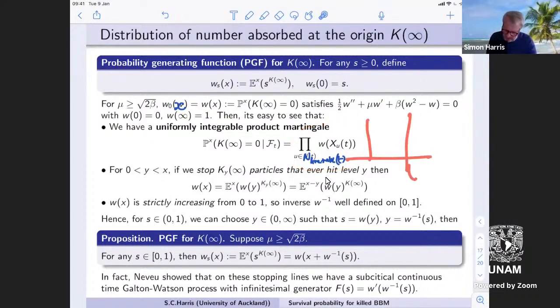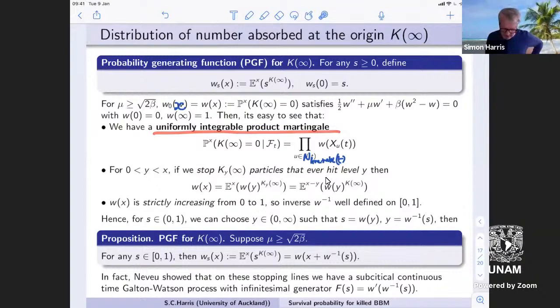So basically your product over all of the particles, and each of them has got this probability w_x(u_t). That's the position where it is at time t. That's the probability that it doesn't have any individuals in its subpopulation that get absorbed, and that's got to be true for all of the individuals. So this is now a product martingale.